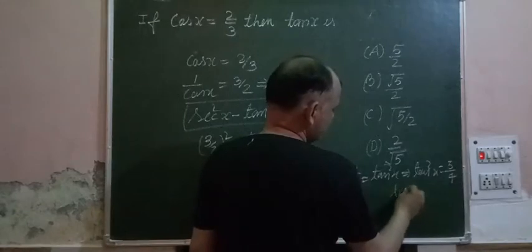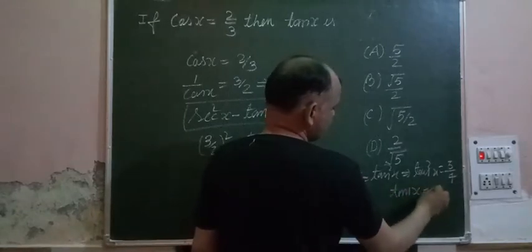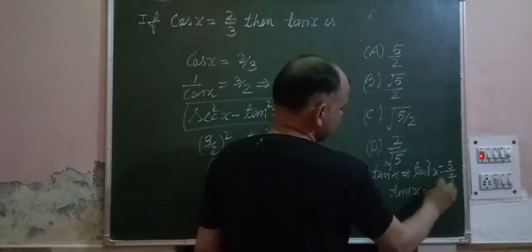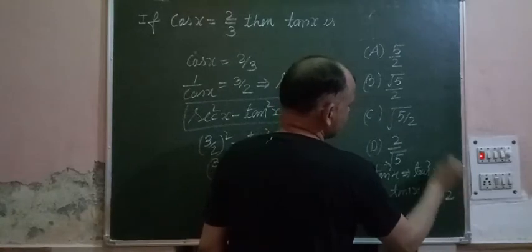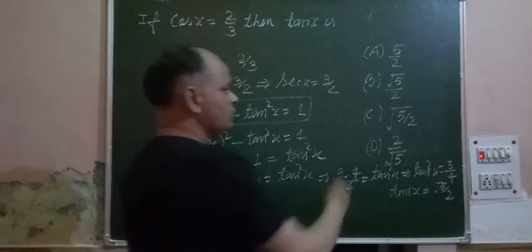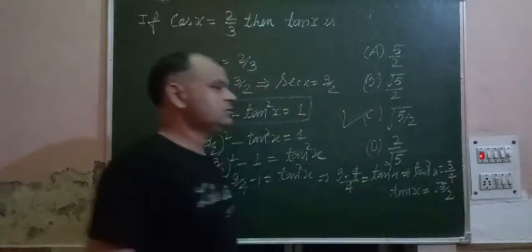So when we take the square root of both sides, we get root 5 upon 2. So the answer to this question is root 5 upon 2, which is found in option C.